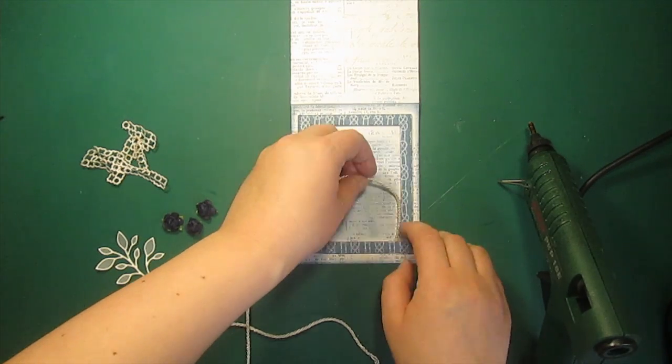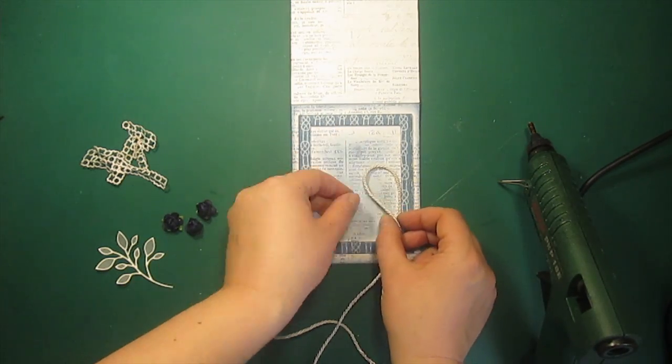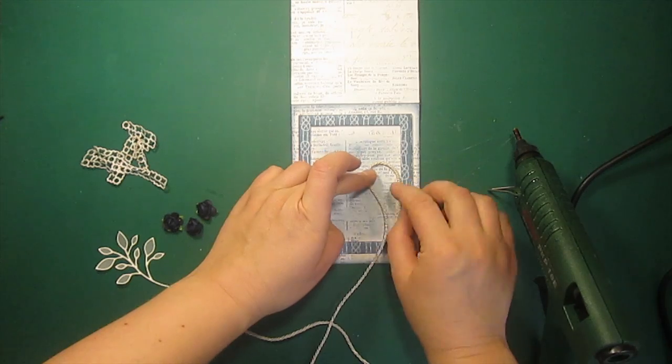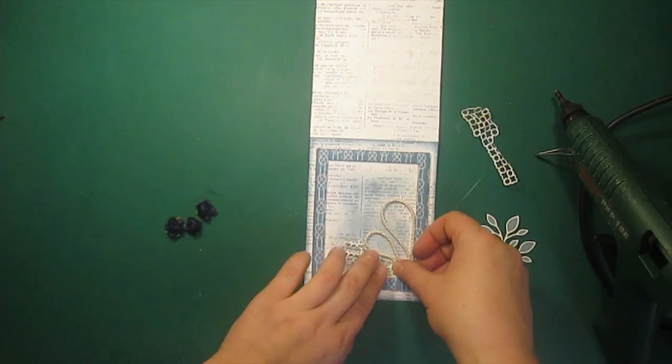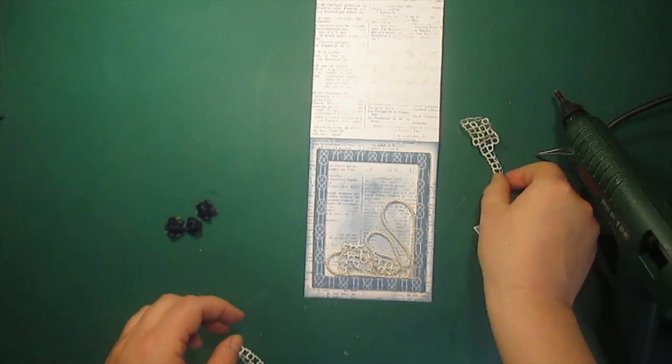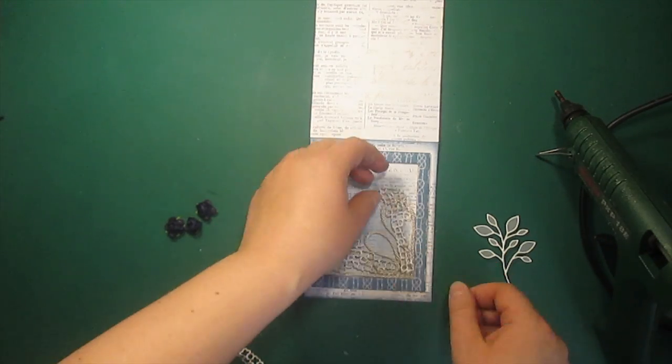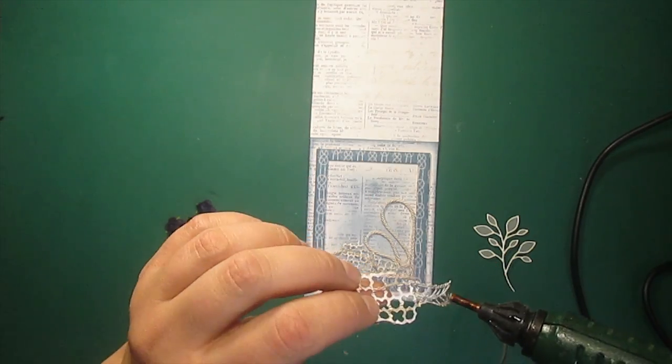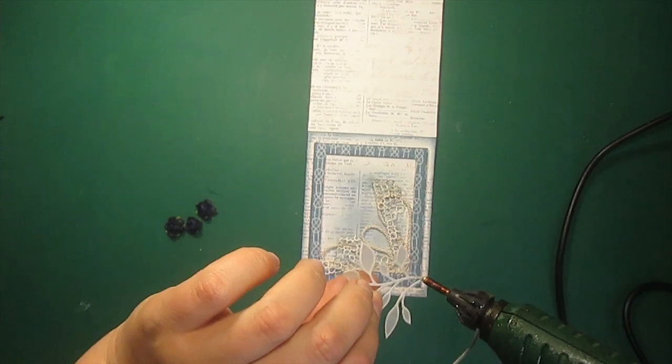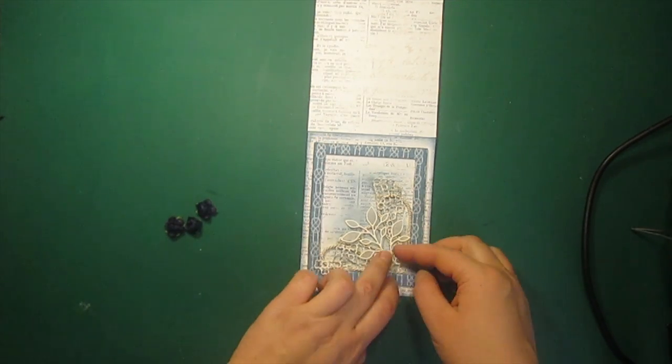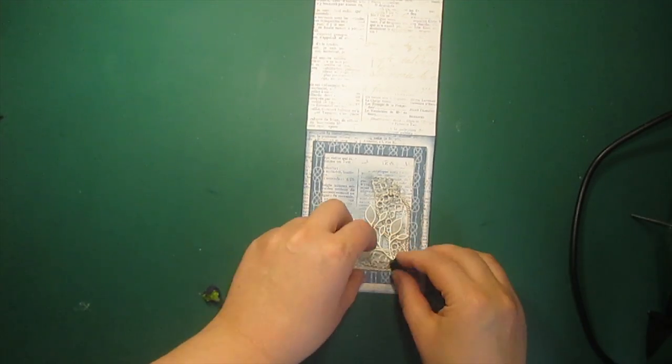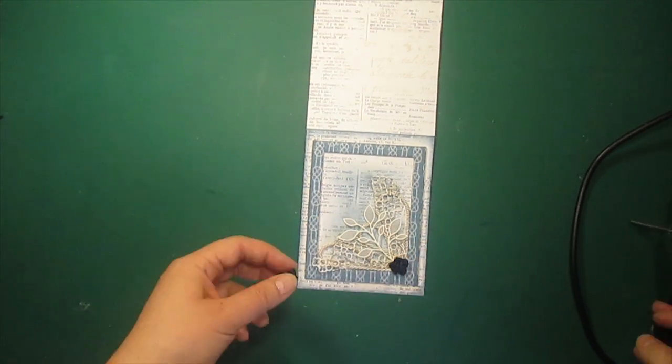To embellish my card I'll be using the same materials I did for the pillow box. First comes the rope. Then some leftovers of the mesh. Then the leaves. And the three blue roses on top.